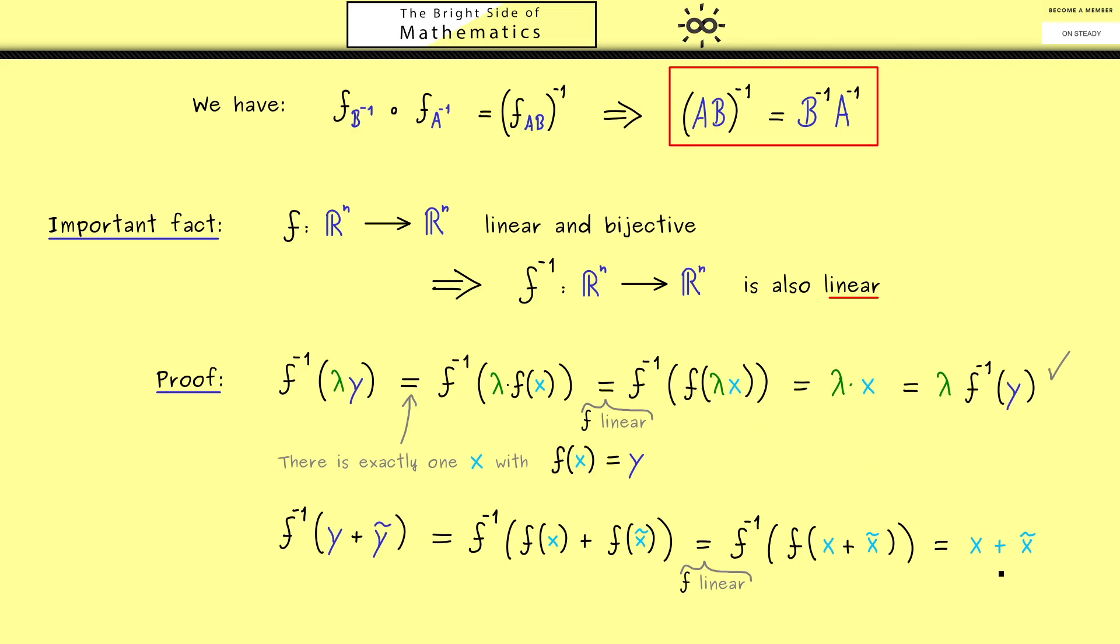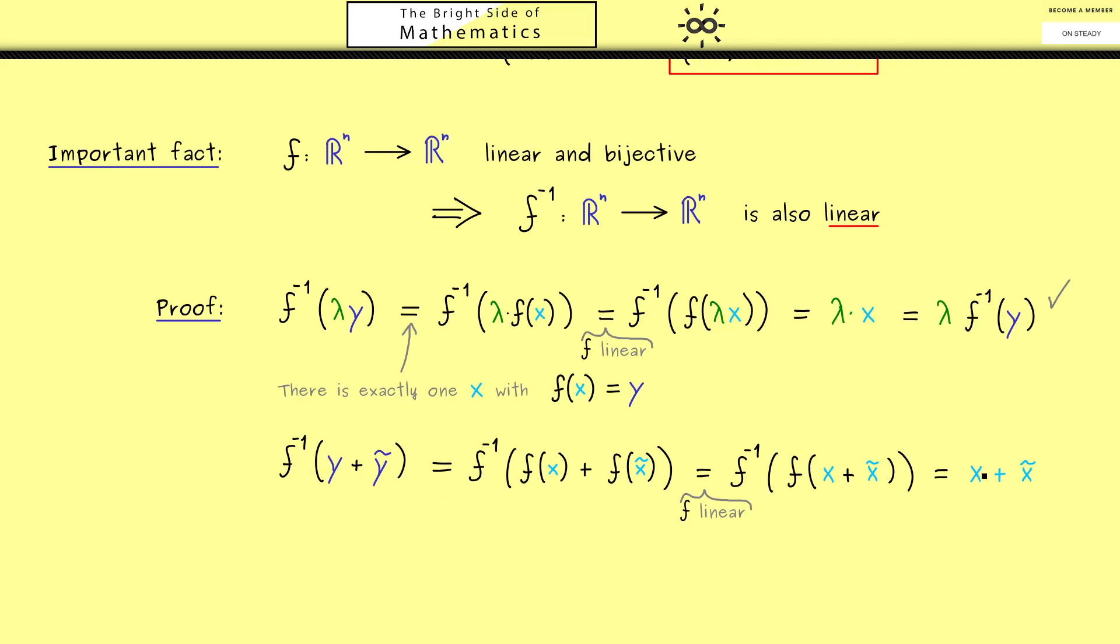And then the reasoning is the same as before. x is F inverse of y, and x tilde is F inverse of y tilde. And indeed, this is all we need to do. We can read it from left to right again, and we see this is the additivity of our map F inverse. And because this works for all vectors y and y tilde, our proof is finished.